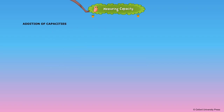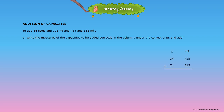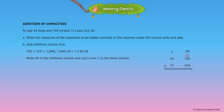Addition of capacities. To add 34 liters 725 milliliters and 71 liters 315 milliliters: A. Write the measures of the capacities to be added correctly in the columns under the correct units and add. B. Add the milliliters column first. 725 plus 315 is equal to 1040. 1040 milliliters is equal to 1 liter 40 milliliters.